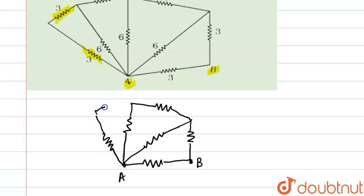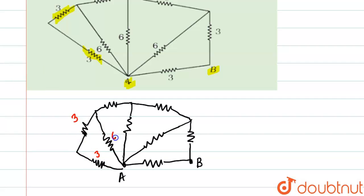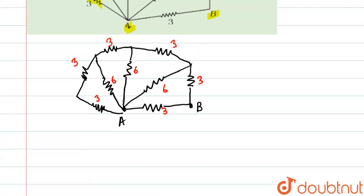We need to solve this carefully to make no errors. Now we are going to label all the values: 3, 3, 6, 3, 6, 6, 3, 6, and 3 ohms. This is basically our diagram. I drew it so as to make it easier to understand.